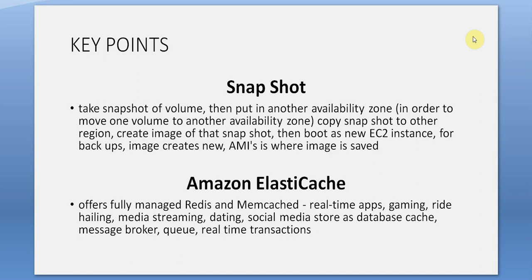Amazon ElastiCache: offers fully managed Redis and Memcached. Use cases include real-time apps, gaming, ride-hailing, media streaming, dating, social media, database cache, message broker, queue, and real-time transactions.